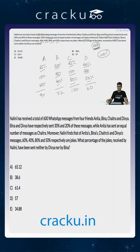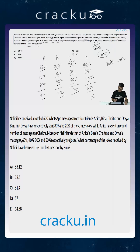These are the number of jokes individually sent by the four friends. So the total number of jokes sent will be 90 plus 72, which is 162, plus 120, which is 282, plus 60, which is 342. The number of jokes which are neither sent by Divya nor by Bina will be 90 plus 120, which is equal to 210.